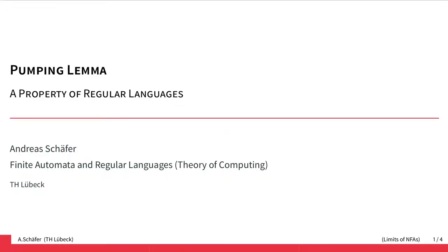In the video on limits of finite automata, we have seen that finite automata cannot count. There is always an upper bound — at some point an automaton cannot distinguish whether it has seen n or n+1 inputs of some kind. This idea leads to the so-called pumping lemma.